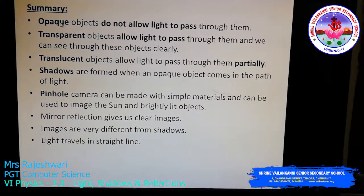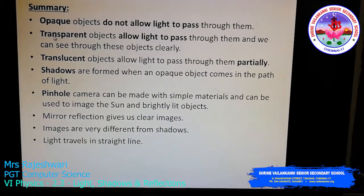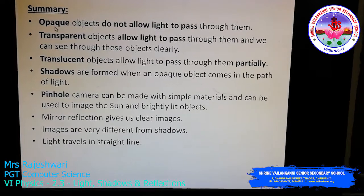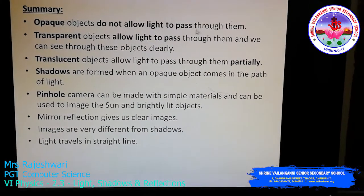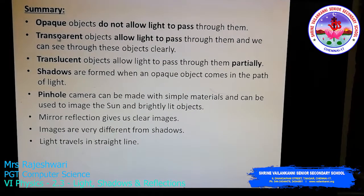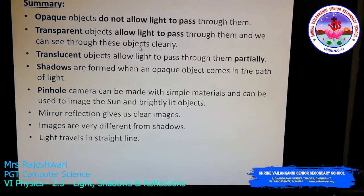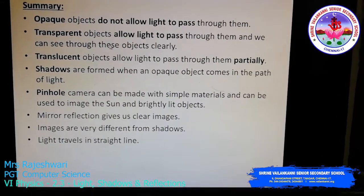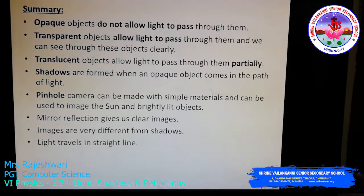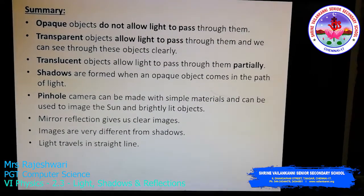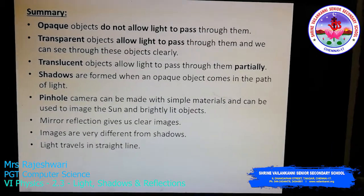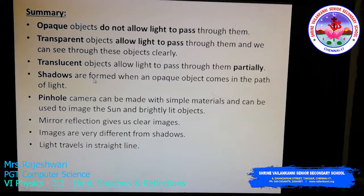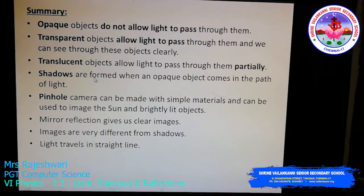We discussed three different types of objects related to light. An opaque object does not allow light to pass through it. A transparent object allows light to pass through and you can see objects very clearly. A translucent object allows light to pass through only partially, so you cannot see objects clearly.